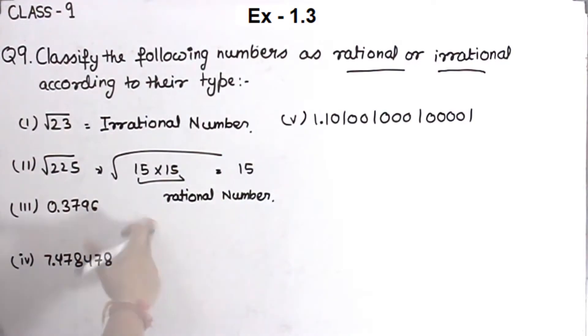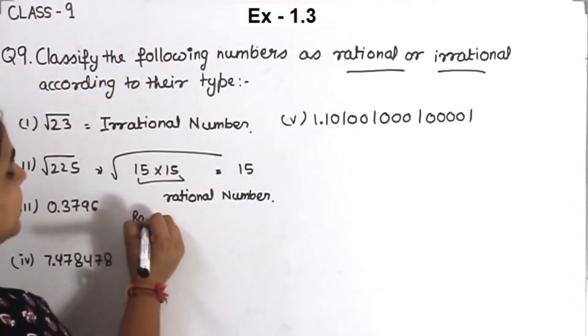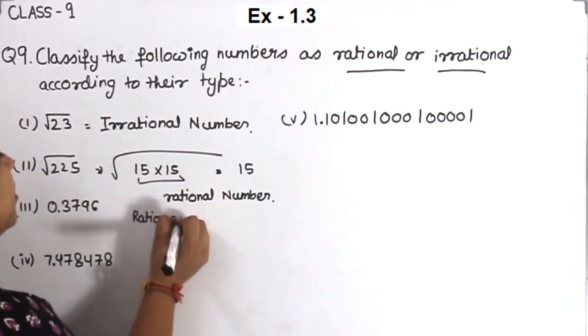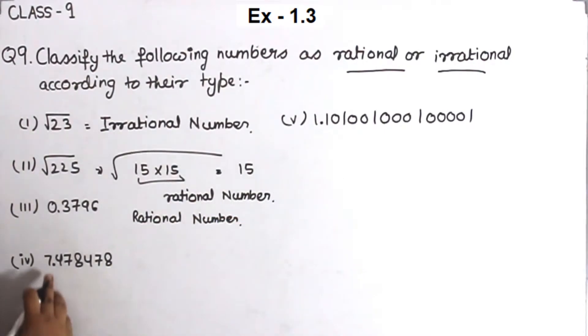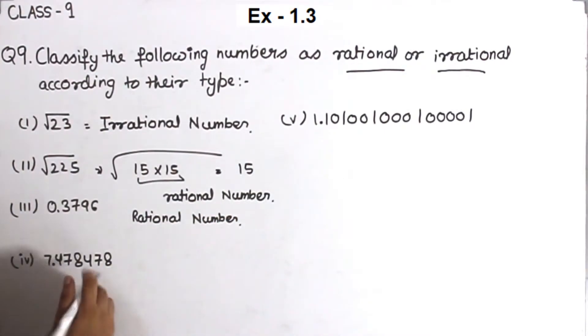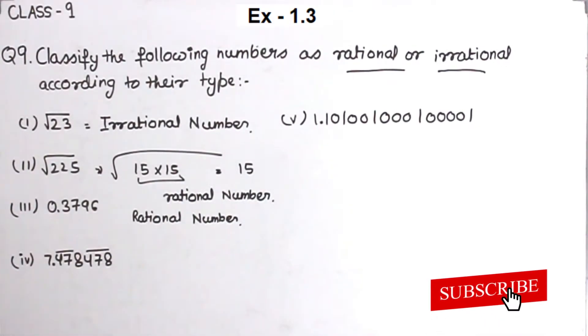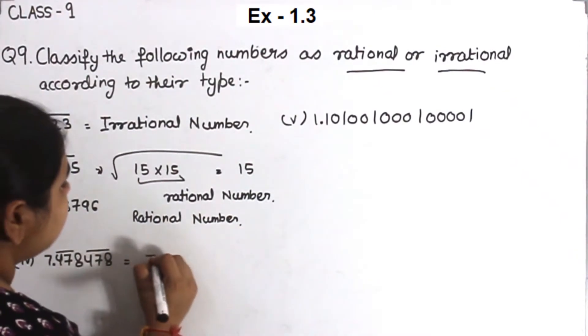Now part 3. Part 3 is 0.3796. This is terminating, so it is a rational number. Now the fourth, 7.478478, that means recurring. So this one is an irrational number.